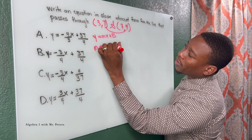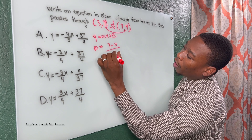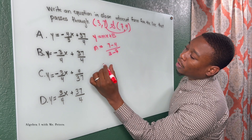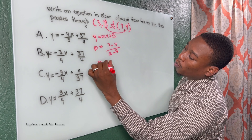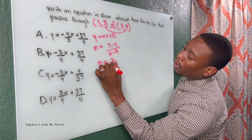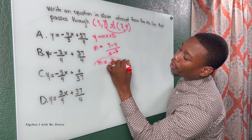So we have 7 minus 4 on top, all over 3 minus 7. So my slope is equal to 3 over negative 4.